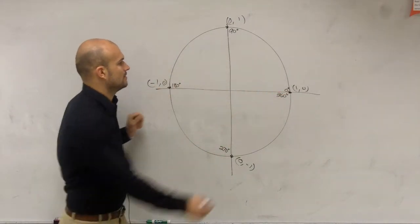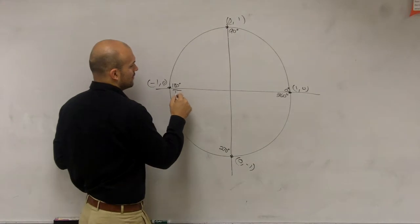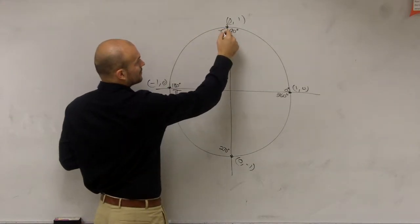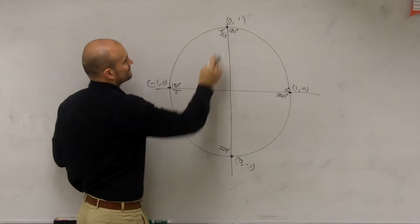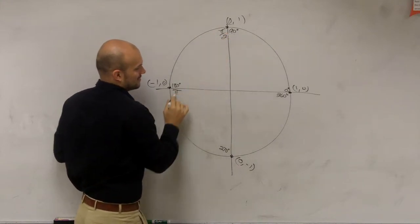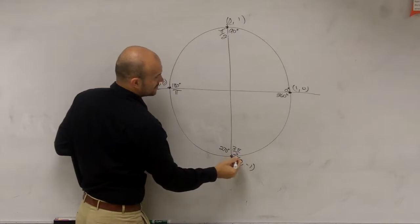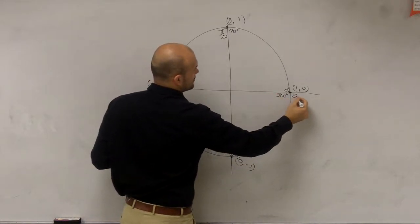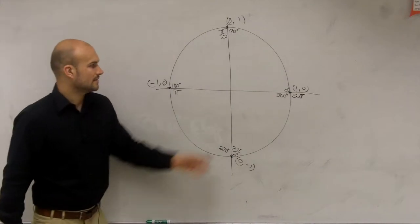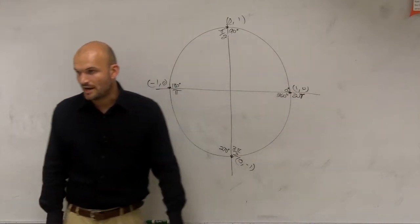The next thing we talked about was halfway around, remember, was what we called pi. So half of that would be pi over 2 — pi halves. Here it's going to be 3π/2, and then all the way around we call 2π. Because if the period here is π, then all the way around is going to be 2π.